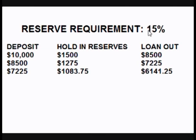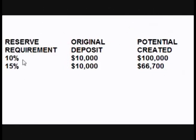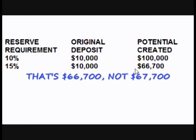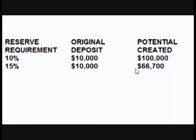The bank must hold $1,083.75, leaving only $6,141.25 to loan out. As you can see, raising the reserve requirement by just 5% significantly lowers how much money can be created. If the reserve requirement is 10%, a $10,000 deposit has the potential of creating $100,000 — ten times the original deposit. If the reserve requirement is 15%, a $10,000 deposit has the potential of creating only $67,700 — about 6.7 times the original deposit.